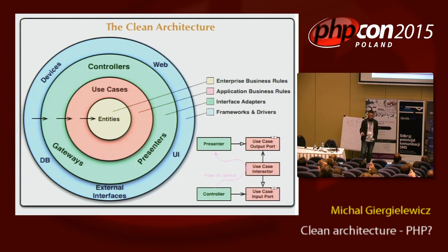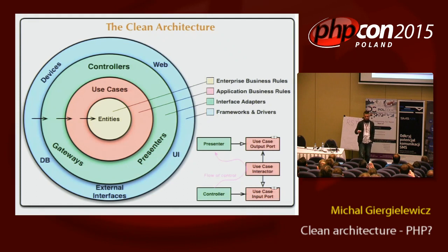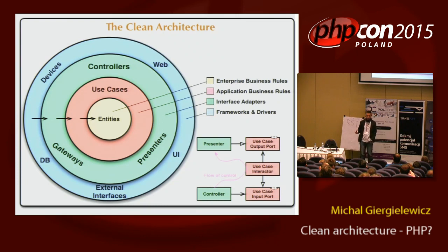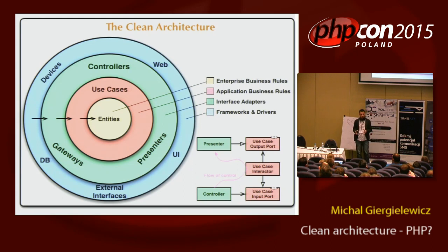Entities are your enterprise business rules, or application-agnostic business rules — the most generic business rules that govern your whole application, maybe even many different applications if your system is big. On top of that, you have use cases. This is the old idea before user stories came to be, where you have some specification of how to achieve some feature, how to do some action. Use cases are your application-specific business rules. And those two combined together — this is your application.